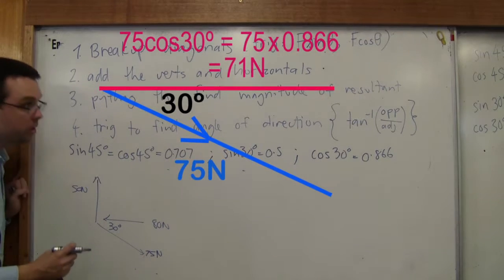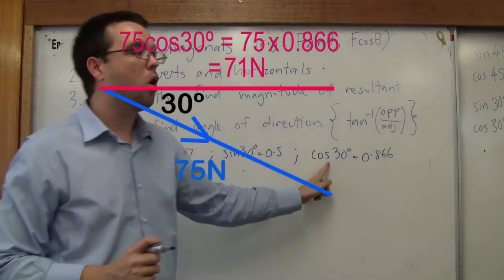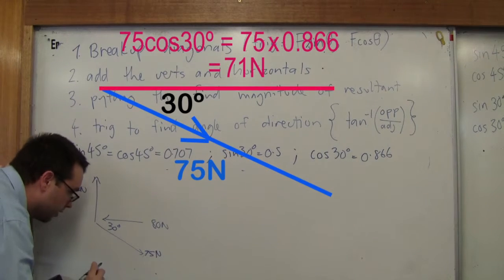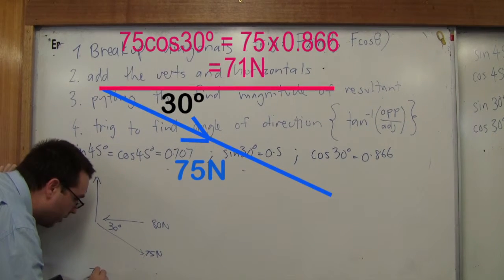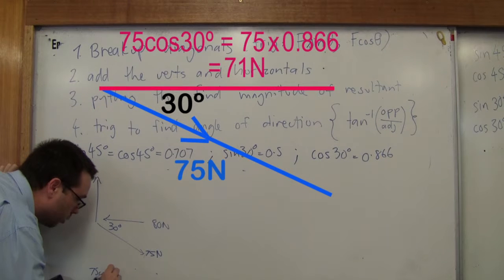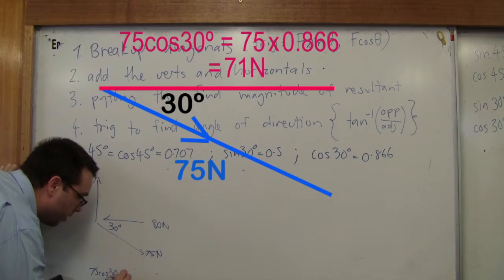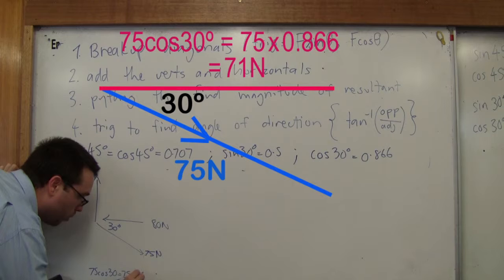So my rule for cos 30 degrees is 0.866. So I can write 75 cos 30 degrees equals 75 times 0.866.